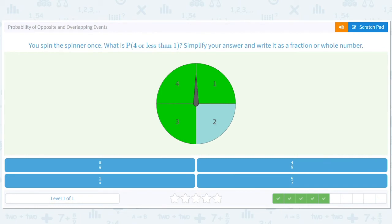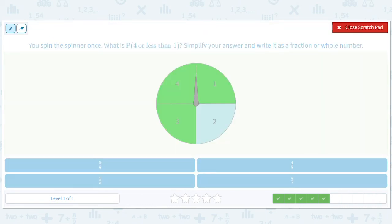You spin the spinner once. What is the probability of getting four or less than one? So let's use the same logic. Less than one, that's nothing. Nothing is less than one on this spinner, right? So that's sort of a moot event. So what about four? Well, that's just this. So that is one out of four.